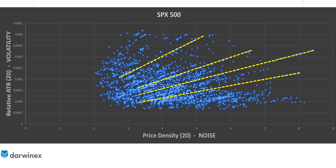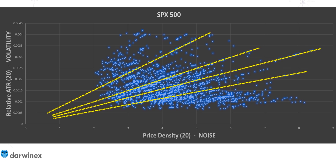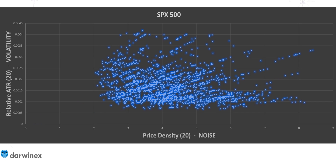Interestingly, if we extend each of these lines, they all meet at the origin. These straight lines were formed because the noise and the volatility were exhibiting correlated behaviour at that time. So if volatility increased, so did noise. And if it increased more, noise increased more too. That is what gives us these linear relationships within the data.